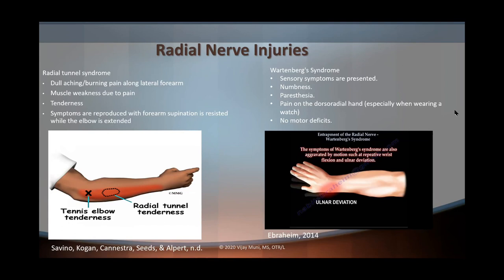Now let's talk about Wartenberg syndrome. Wartenberg syndrome is different from Wartenberg's sign — Wartenberg's sign is used to test for ulnar nerve palsy. With Wartenberg syndrome, there are only sensory symptoms being presented; there are no motor deficits. A person can complain of numbness, paresthesia such as pins and needles, and excruciating pain on their dorsal radial hand. This is especially notable because they will not be able to tolerate wearing a watch or handcuffs.